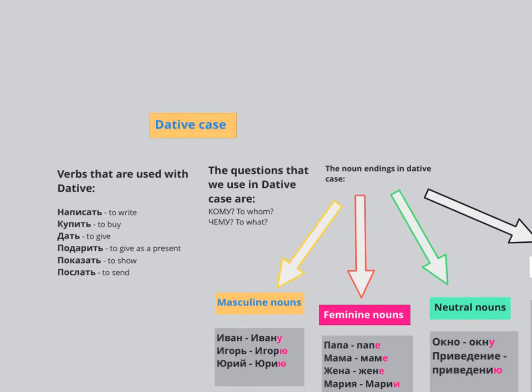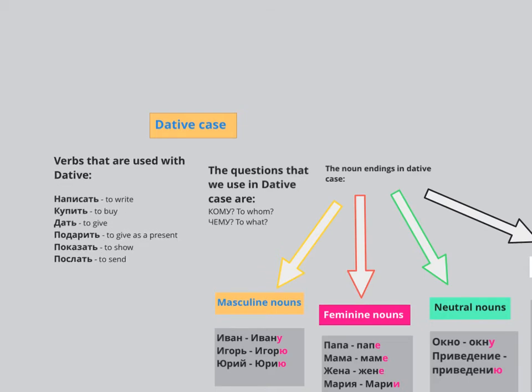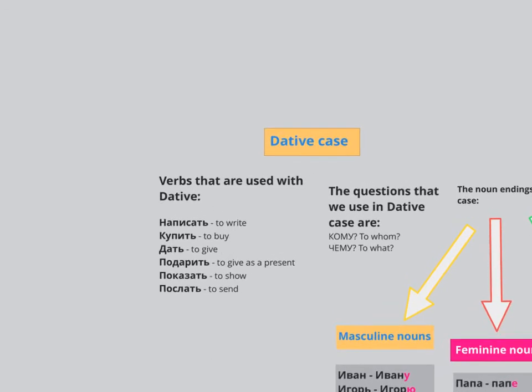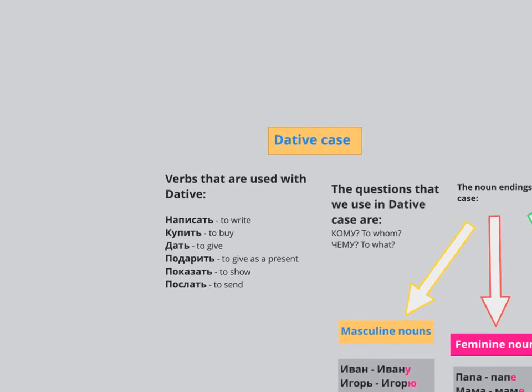Привет! Let's have a look at the dative case today. Dative case is when you give things to somebody, so this somebody will have to have a certain ending. When you give something, that's accusative; to somebody, that's dative case. So let's have a look at the dative — it will be used in combination with accusative.